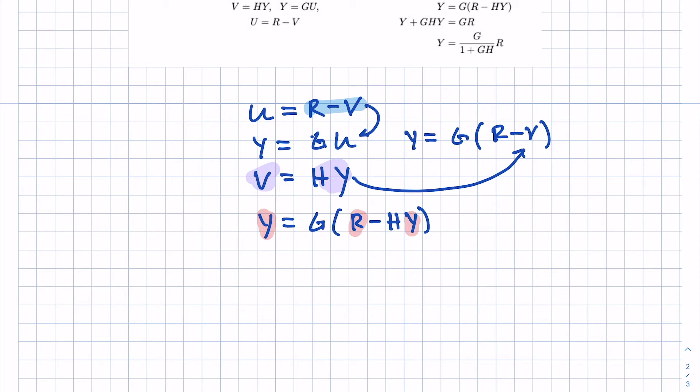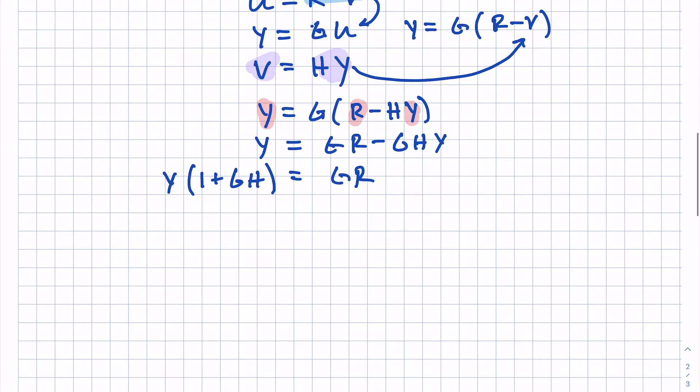So from there, it's just a matter of doing algebra. So I distribute the G across, G R minus G H Y, move Y to the other side and factor that out, and it becomes 1 plus G H is equal to G R, and then solve for the transfer function. I can move the R down and move the 1 plus G H to the denominator, and now I have this feedback transfer function.